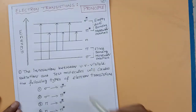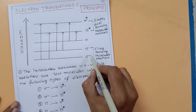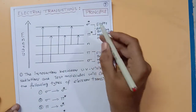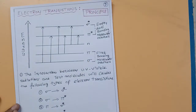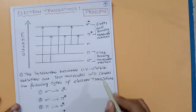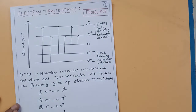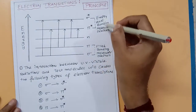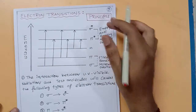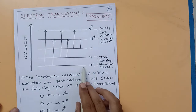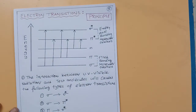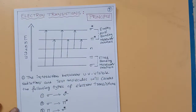Molecules contain bonding and anti-bonding molecular orbitals. The bonding molecular orbitals are sigma and pi; the anti-bonding molecular orbitals are pi-star and sigma-star. There are also electrons in non-bonding molecular orbitals, represented by 'n'. Generally, bonding molecular orbitals are filled with electrons whereas anti-bonding molecular orbitals are empty. By sending UV-visible light, electrons from bonding or non-bonding molecular orbitals are promoted into higher energy anti-bonding molecular orbitals — pi-star and sigma-star.